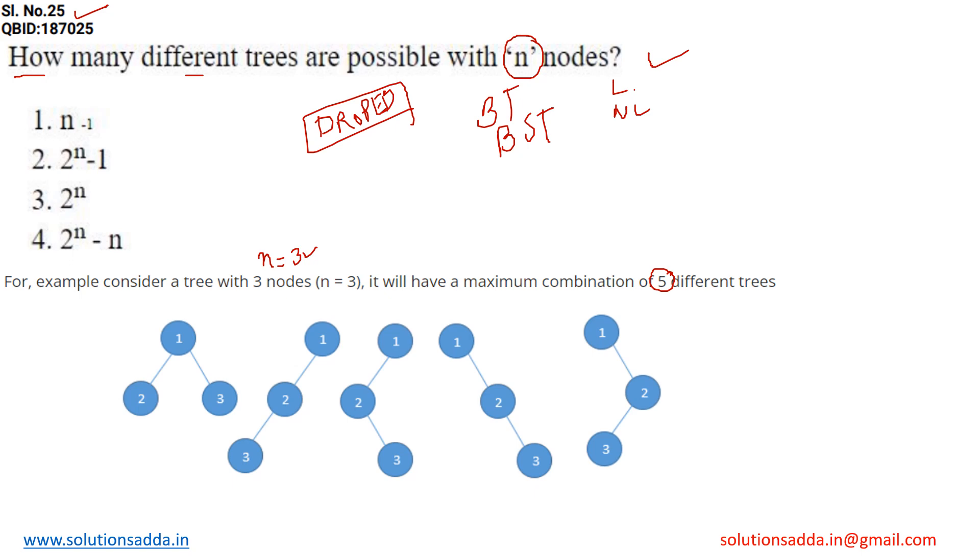Here are the examples that with the help of 3 nodes, we can make the tree like this 1, 2, 3, or maybe 1 in the left side 2, 3, then 1, 2, 3, then in the right side 1, 2, 3, and likewise we can make 5 different trees from n equals to 3.